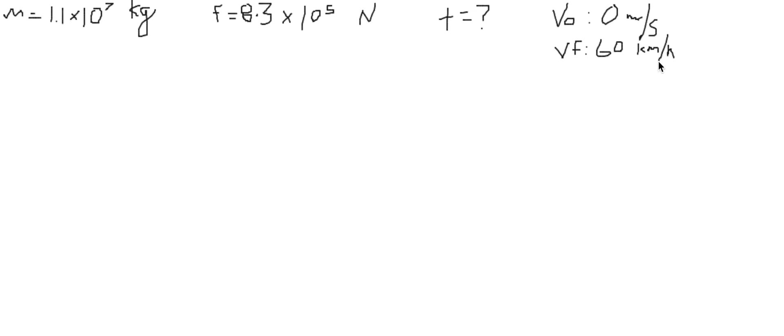So we need to convert this to meters per second first. So 60 kilometers per one hour. One kilometer is equal to 1,000 meters. 60 seconds. 60 times 1,000 divided by 60 divided by 60 gives us a value of 16.67 meters per second.